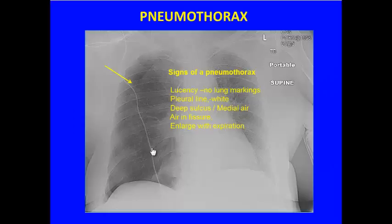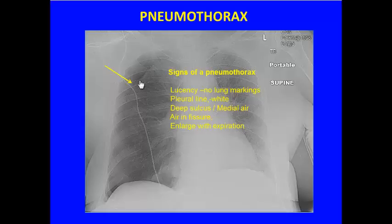Typically with pneumothorax, what we're going to see is some lucency along the lateral margin of the chest. We'll see no lung markings in that peripheral area, and if we see that edge of the pleura we'll see a little white line along it. Sometimes we'll see the sulcus on one side appear to go further inferiorly because the air tracks into that pleural space — a deep sulcus — and sometimes we can see the air more medially.